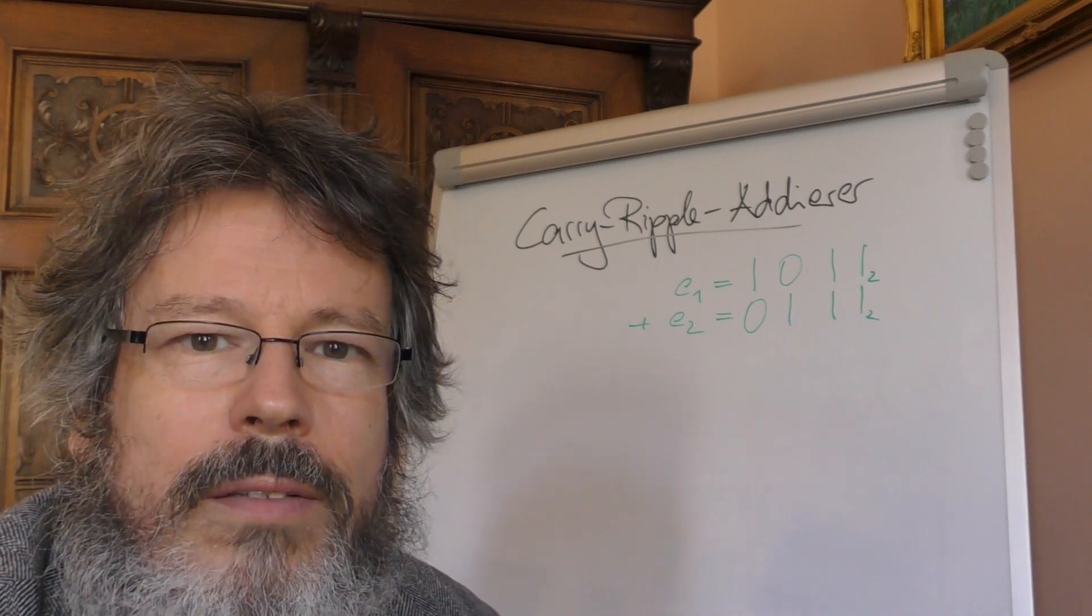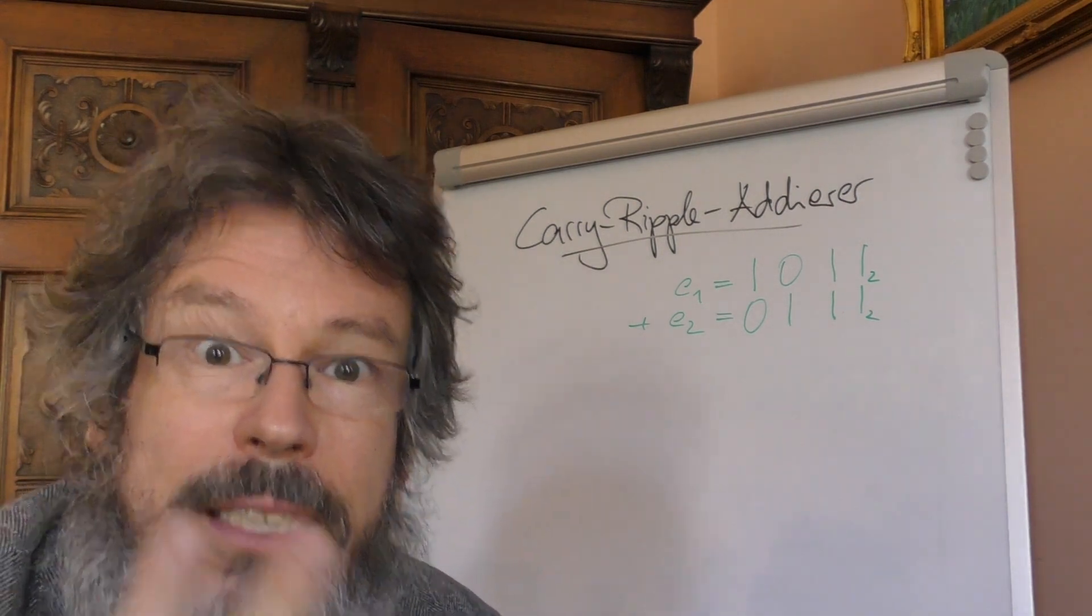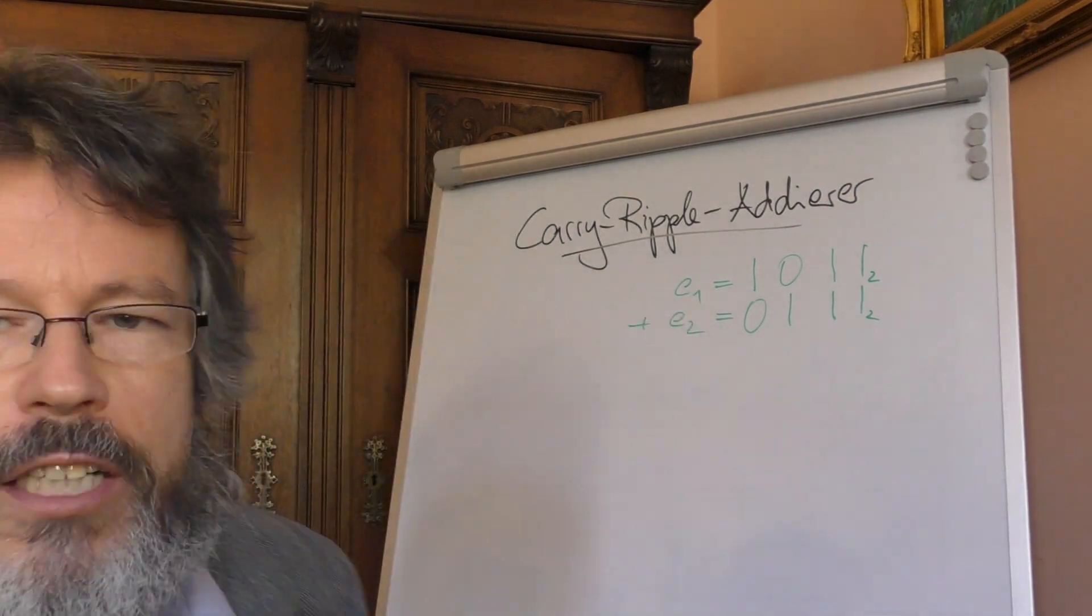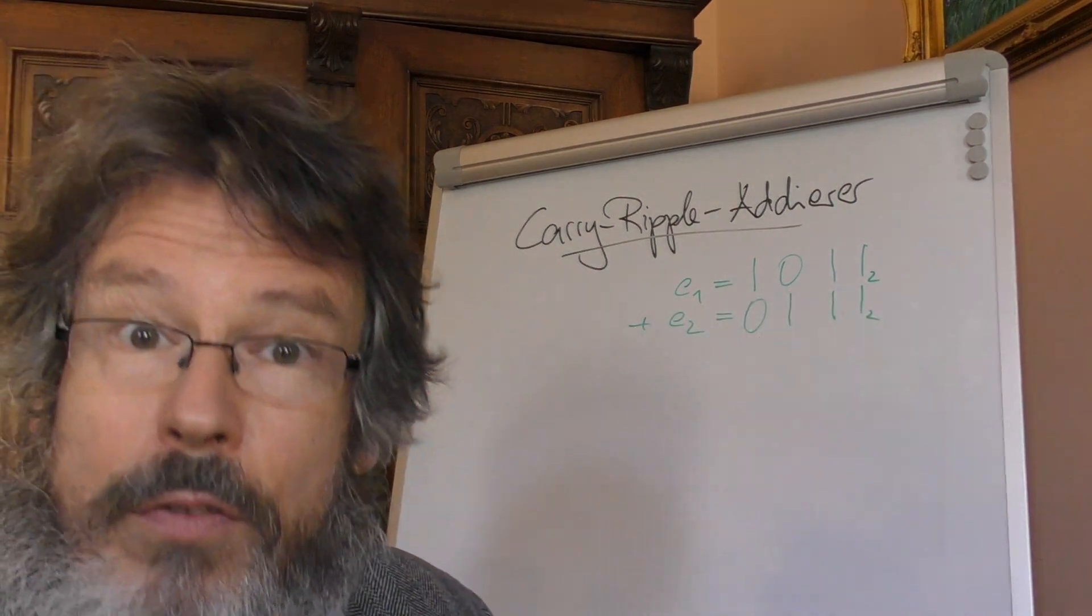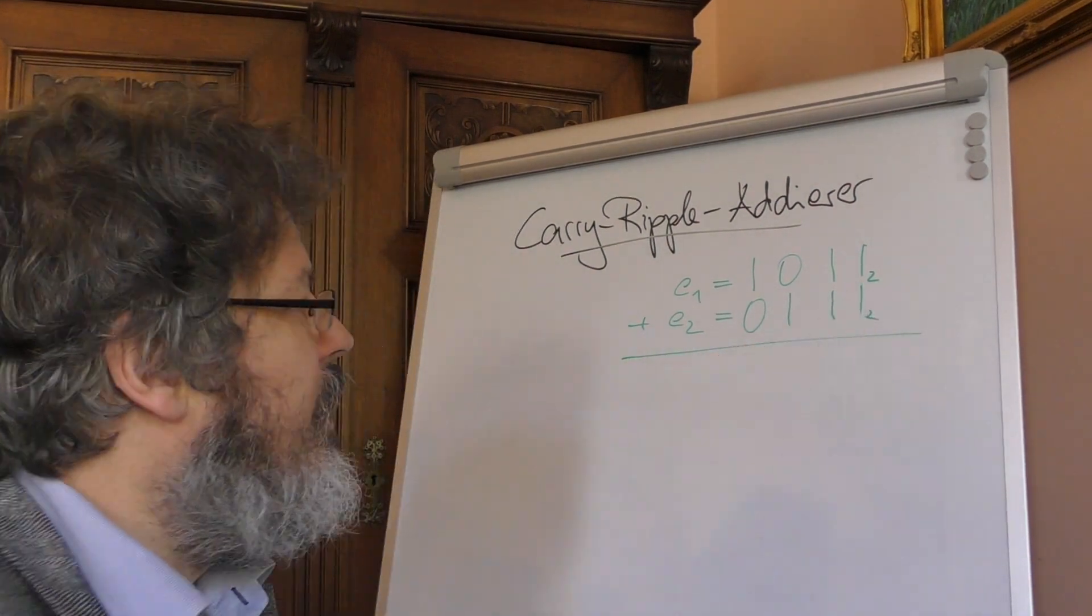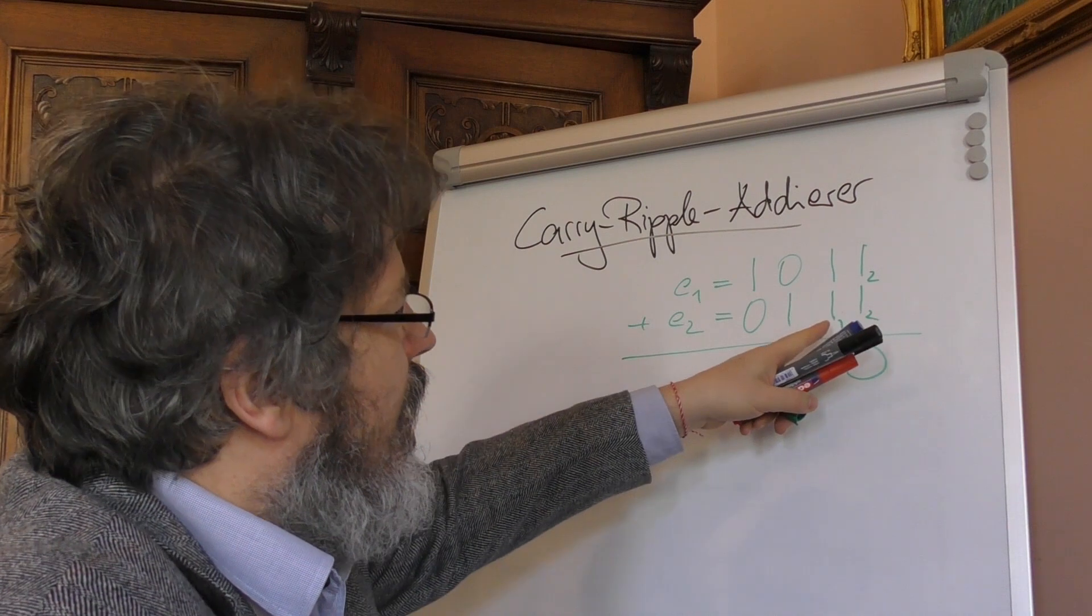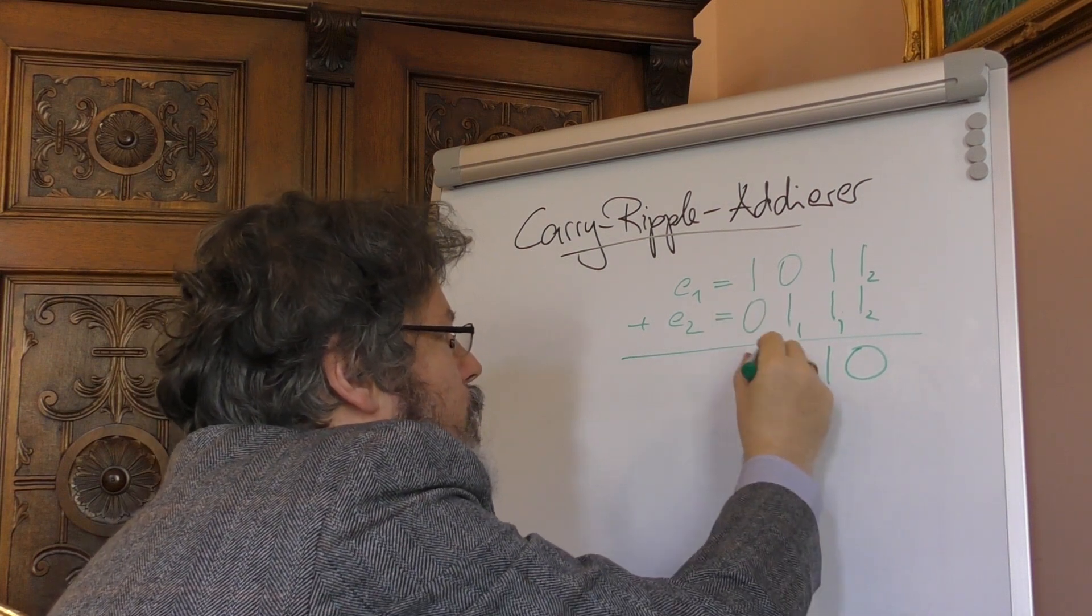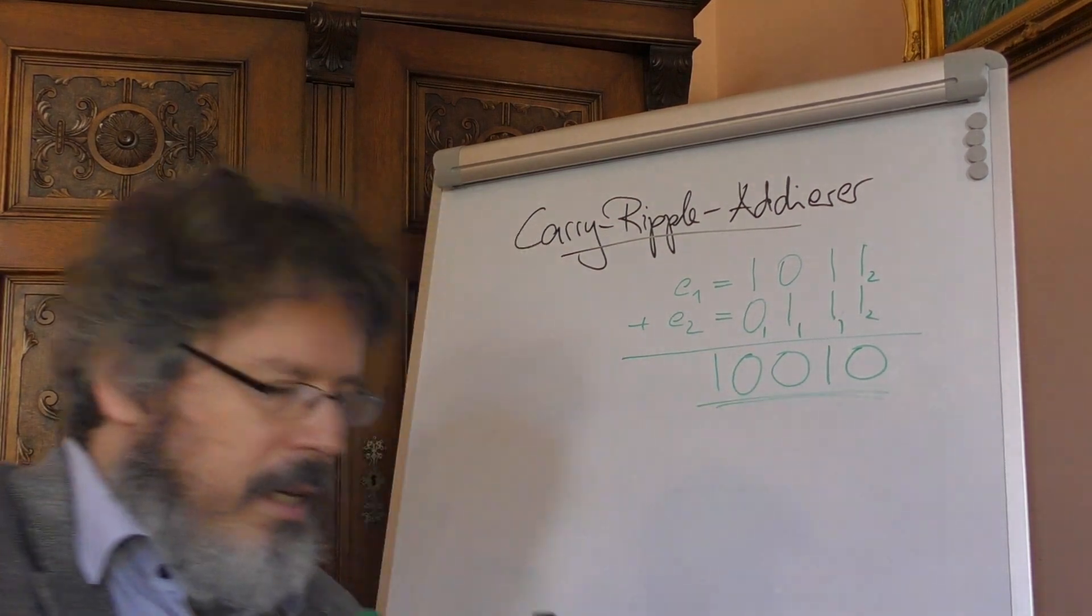Es ist hoffentlich wenig überraschend, dass das Addieren von längeren Binärzahlen so ähnlich funktioniert, wie wir in der Schule gelernt haben, Dezimalzahlen zu addieren. Schauen wir uns trotzdem noch mal ein kurzes Beispiel an. Wir haben hier zwei vierstellige Binärzahlen, E1 und E2. E1 heißt 1, 0, 1, 1. E2 lautet 0, 1, 1, 1. Und wir wollen die jetzt addieren. Dann beginnen wir, wie üblich, am hinteren Ende, zählen also 1 plus 1 zusammen. Das gibt uns eine Summe von 0 mit einem Übertrag von 1. 1 plus 1 plus 1 gibt uns eine Summe von 1, wieder ein Übertrag von 1. 1 plus 1 plus 0 ist die Summe 0, Übertrag 1. 1 plus 0 plus 1, noch einmal die Summe 0 und ein Übertrag 1. Das ist das Ergebnis unserer Addition.